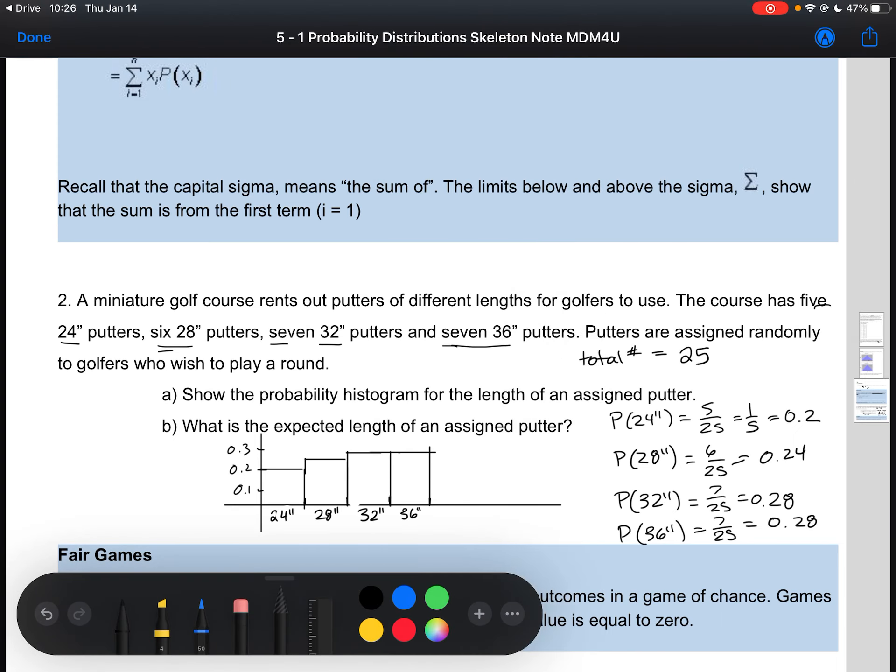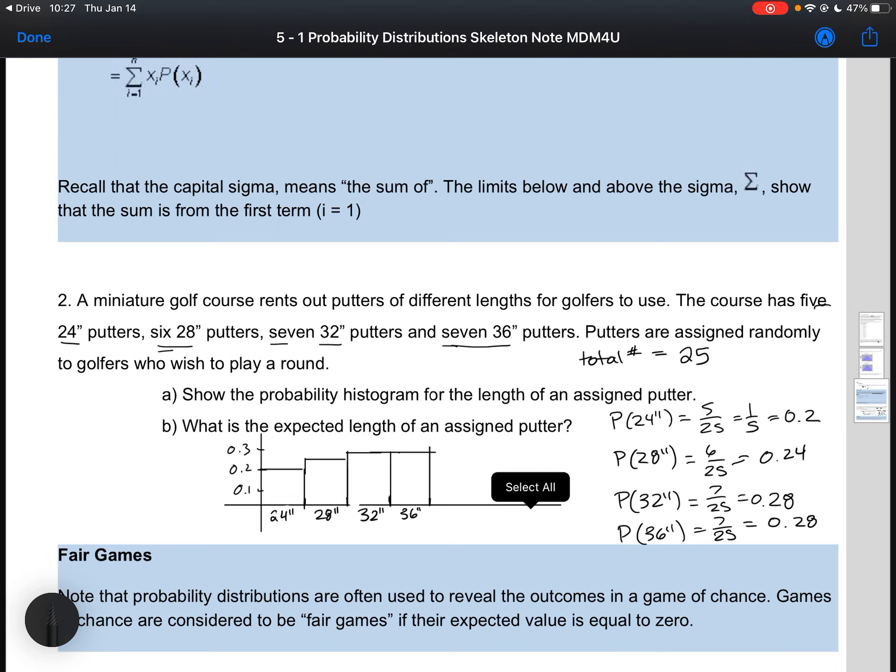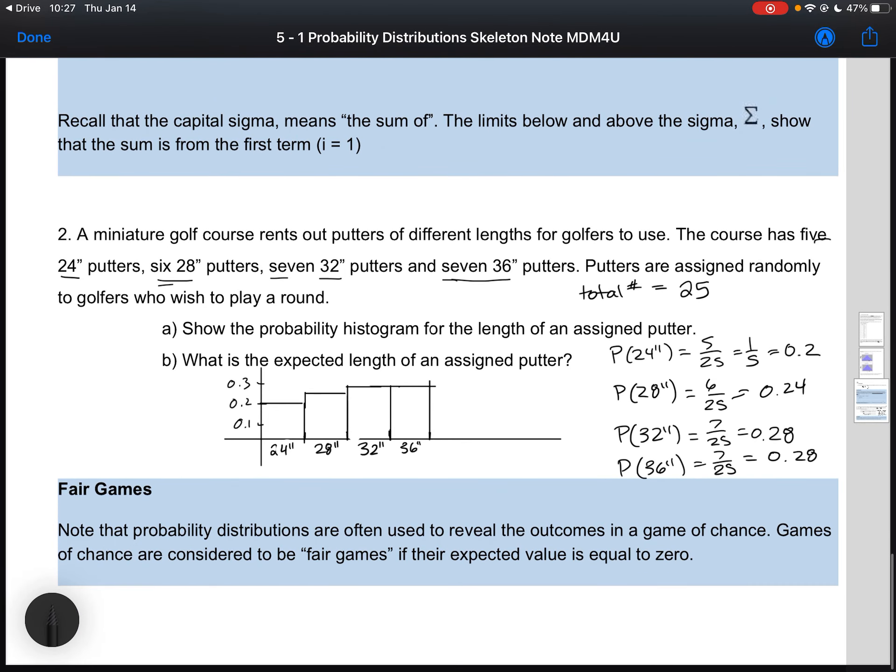We've got a probability histogram. The last thing the video is asking us to calculate is the expected length of an assigned putter. In order to calculate the expected value, we are going to take the length of the putter and multiply by the probability of getting that length. We're going to do the same thing for all of them, sort of like we did when we calculated the weighted mean. So 24 times 0.2 plus 28 times 0.24 plus 32 times 0.28 plus 36 times 0.28. Multiplying all those together, we get an expected value of 30.56, which tells us that the expected length is 30.56.